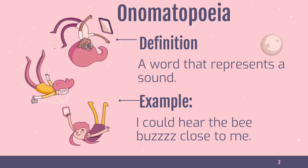An onomatopoeia is a word that represents a sound. An example would be: 'I could hear the bee buzz close to me.' As you can see, the word 'buzz' also resembles the sound that the bee makes — you can hear the buzz itself in the word when you're saying it. That is an onomatopoeia.